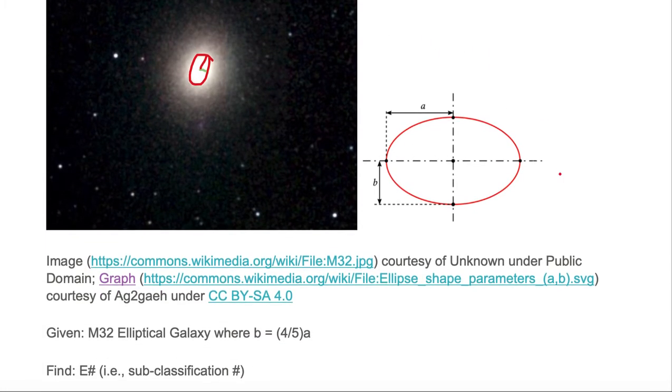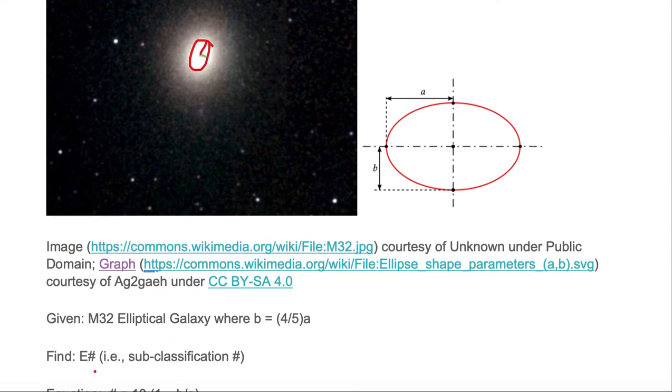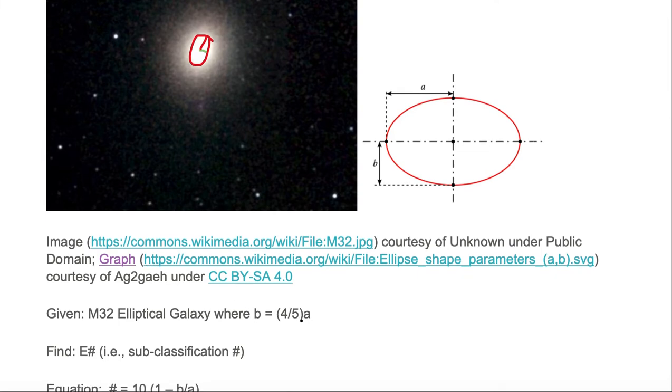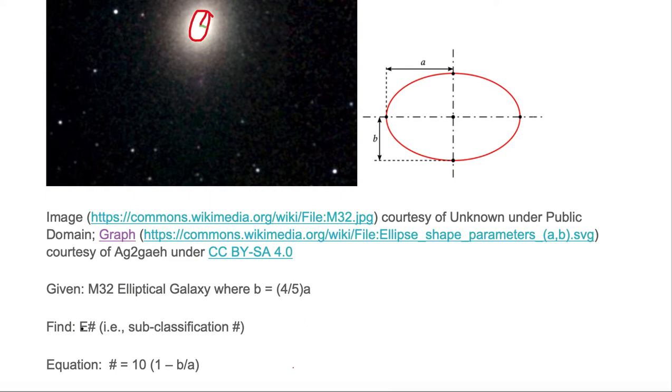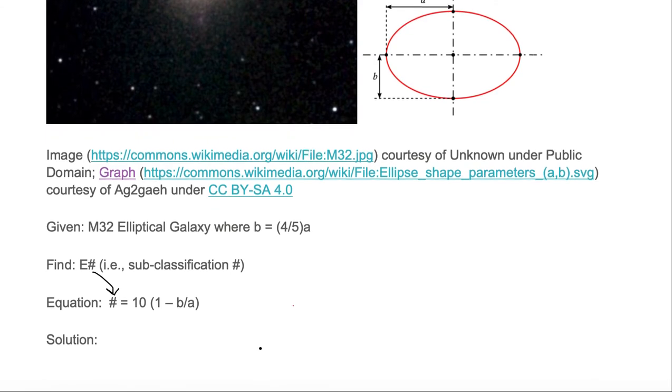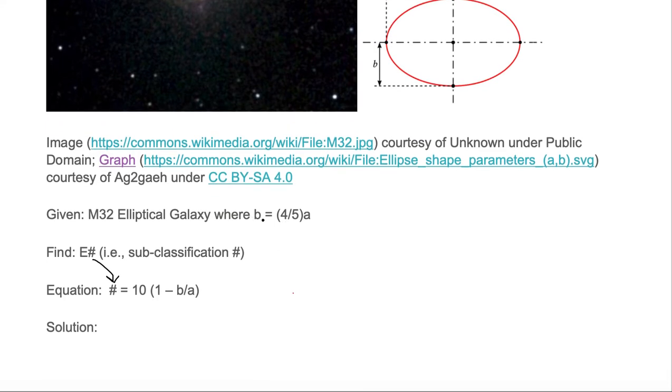Specifically for the galaxy M32, we know that the semi-major axis value B is equal to four-fifths that of A. We want to find this elliptical galaxy number, where the number value is given by the equation 10 times the parentheses of 1 minus B over A. And we're given that B is equal to four-fifths A, so we want to solve for this number. We're going to put our calculation down.